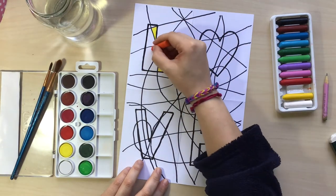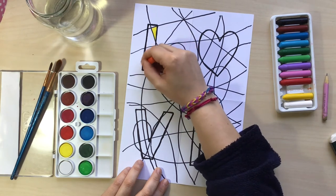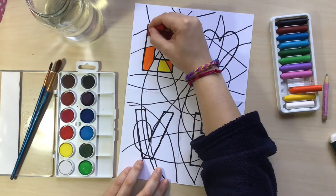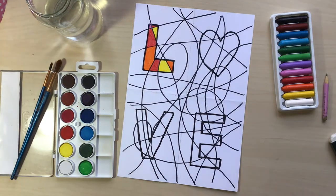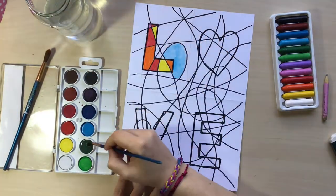And I'm going to color the background with cool colors. Greens, blues, violets. And that's going to make my letters pop up. You're going to see that the final result, it's going to look really amazing.